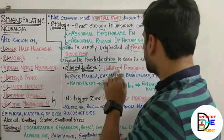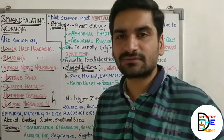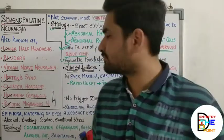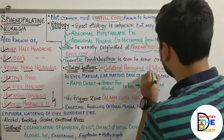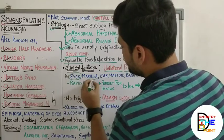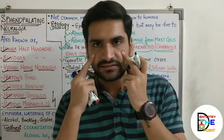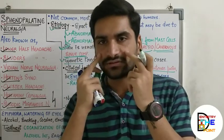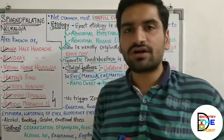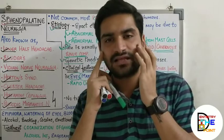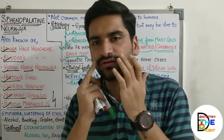The clinical features of sphenopalatine neuralgia are quite simple. There is unilateral paroxysm of intense pain — meaning sudden onset of pain on one side. The pain affects the eyes, maxilla, ear, mastoid, base of the nose, and zygoma. Sometimes the pain is also referred to the occipital region.